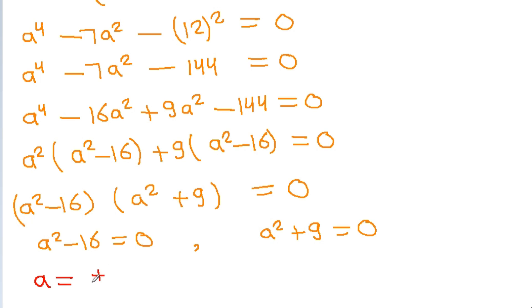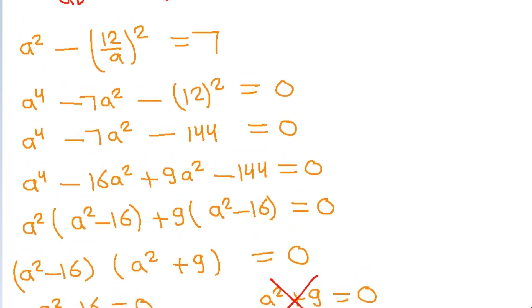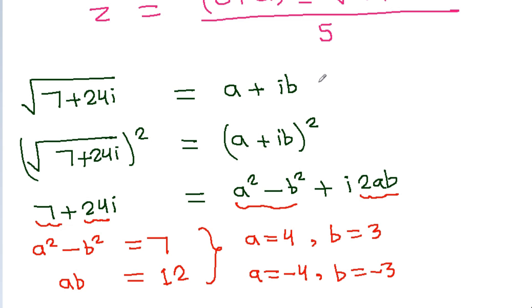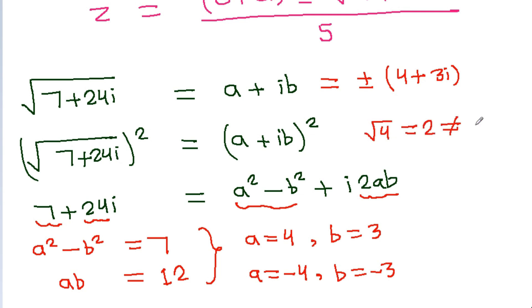Since a is a real number, the solution a² plus 9 equals 0 is not possible. So we get a equals 4 or a equals minus 4. When a equals 4, b equals 3; when a equals minus 4, b equals minus 3. Therefore a plus iota·b equals plus or minus (4 plus 3·iota). Since 7 plus 24·iota is a complex number, the square root of 7 plus 24·iota equals plus or minus (4 plus 3·iota).